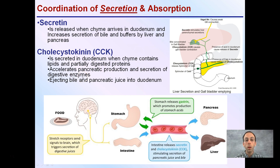The body doesn't want to waste time producing enzymes it doesn't need. CCK will signal the pancreas to release enzymes to help break down the food items determined to be present, and ejecting bile and pancreatic juice into the duodenum will also be another role of this.